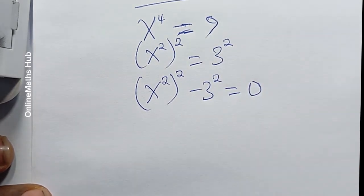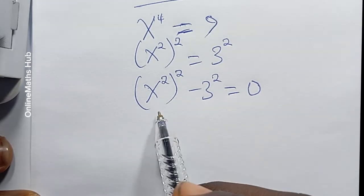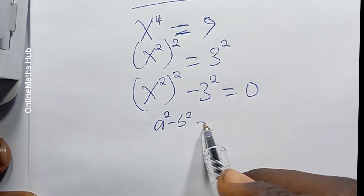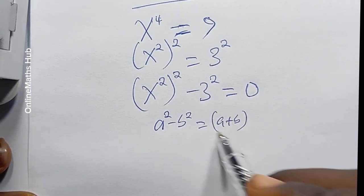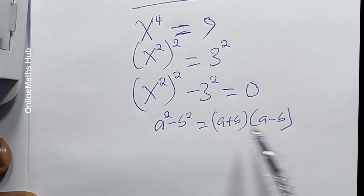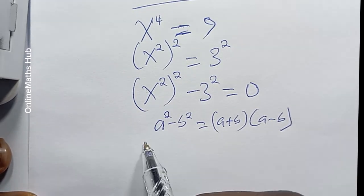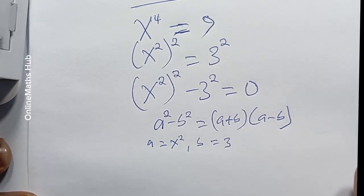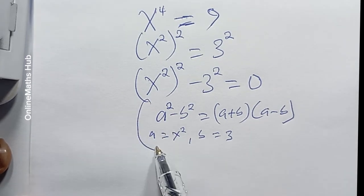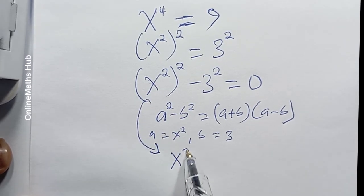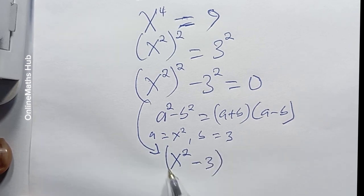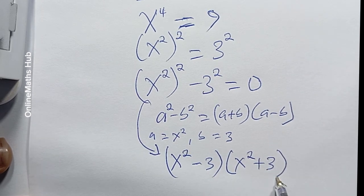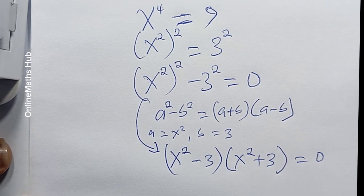So we have (x²)² minus 3² equals 0. The next thing I want to do is apply the difference of two squares. You can remember that a squared minus b squared expands as (a + b)(a − b). Applying that here where a is x² and b is 3, this changes to (x² − 3)(x² + 3) equals 0.